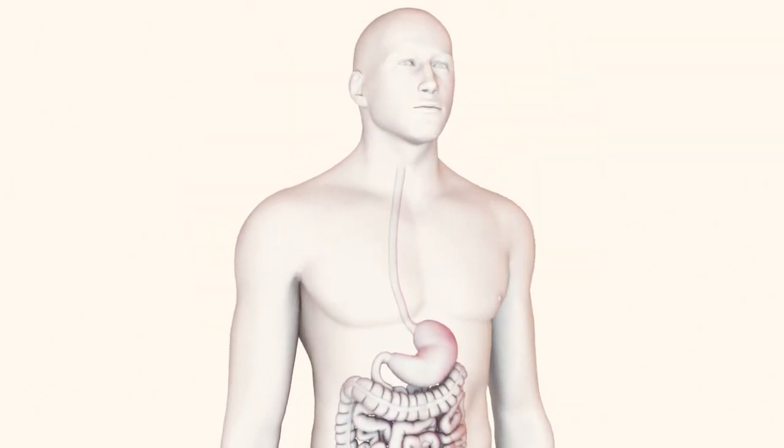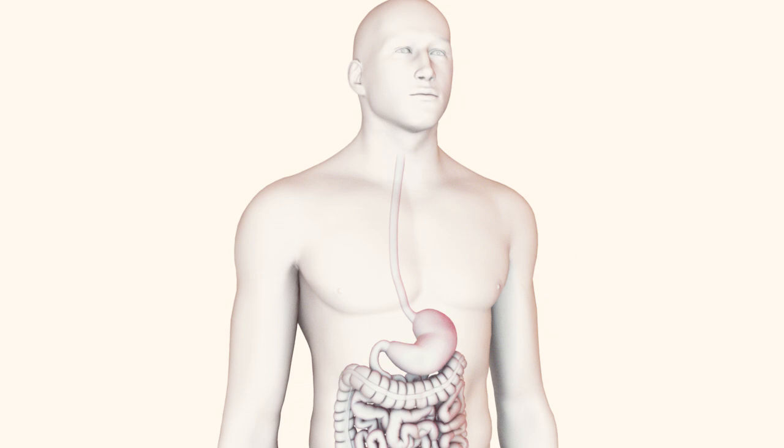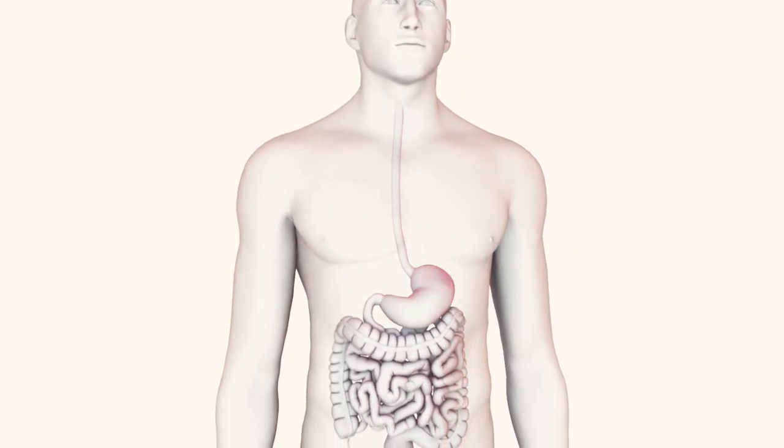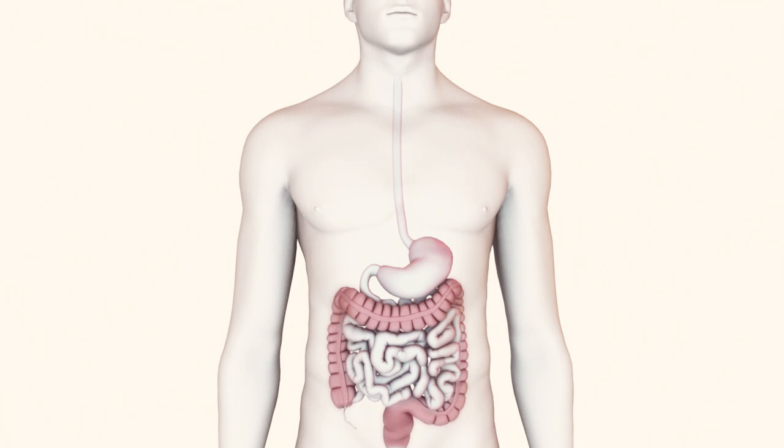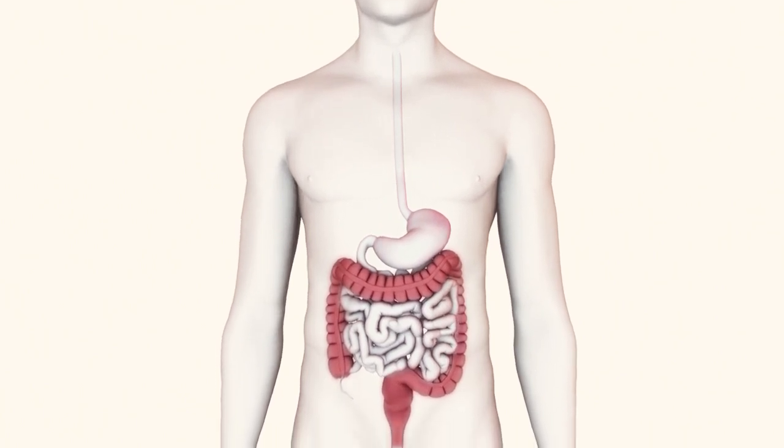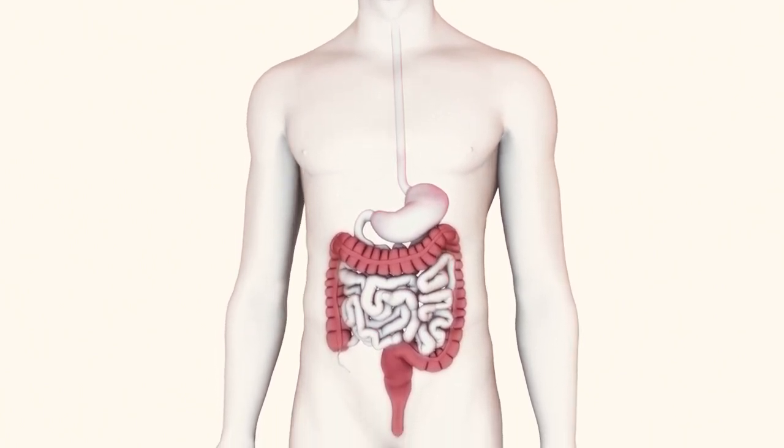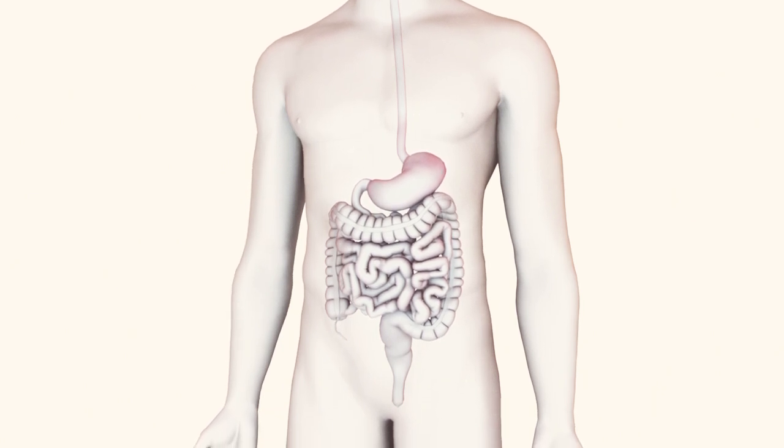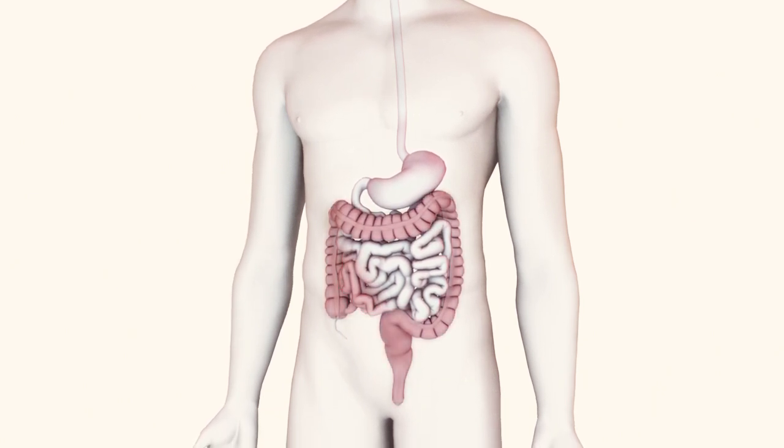Crohn's disease can affect any part of your GI tract, including the mouth, esophagus, stomach, small intestine, large intestine which includes the colon and rectum, or anus. However, it usually affects the very end of your small intestine or your large intestine.